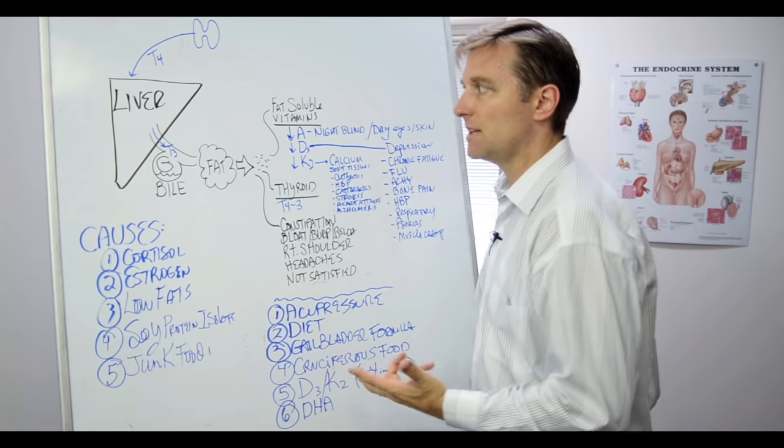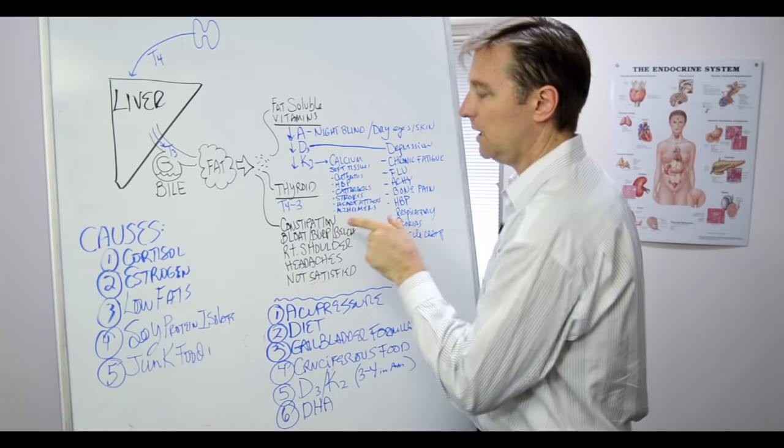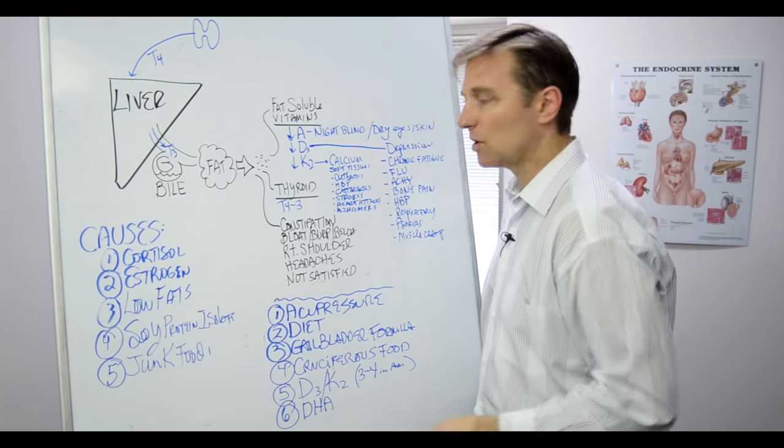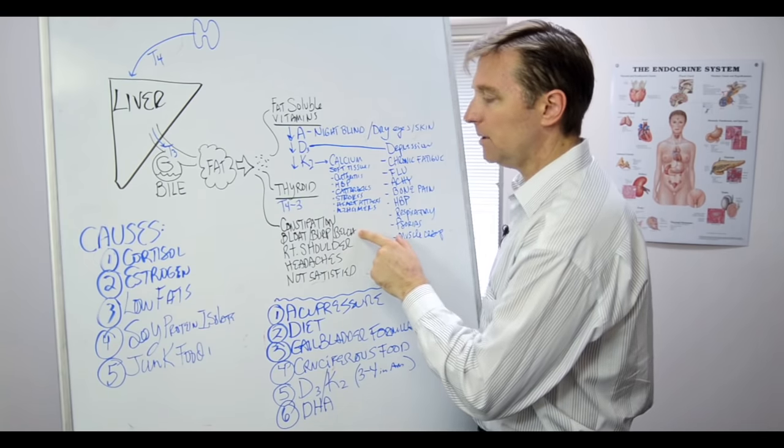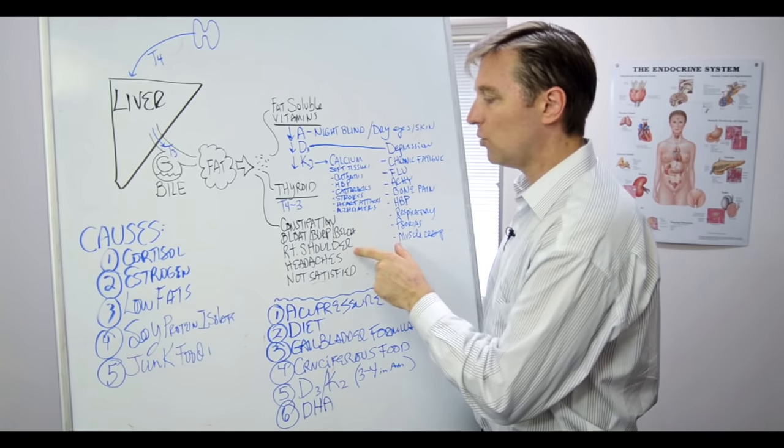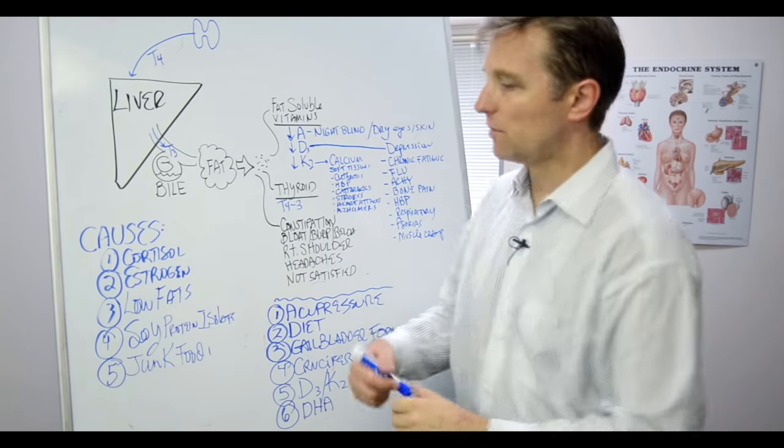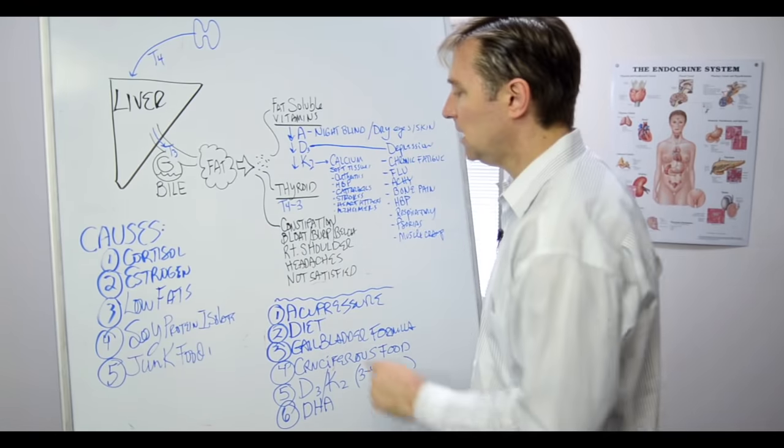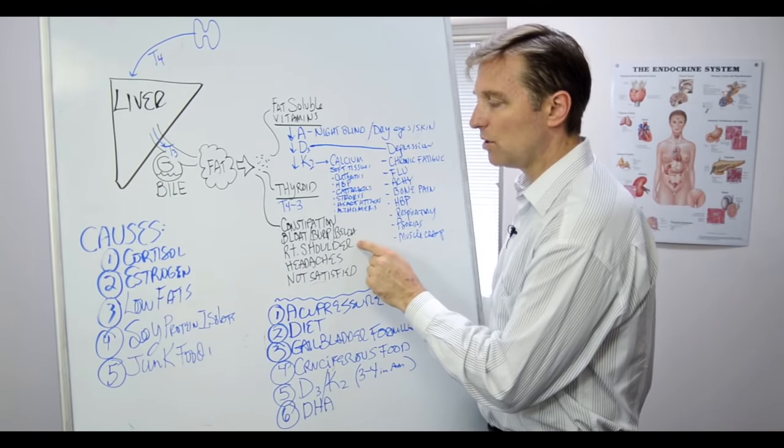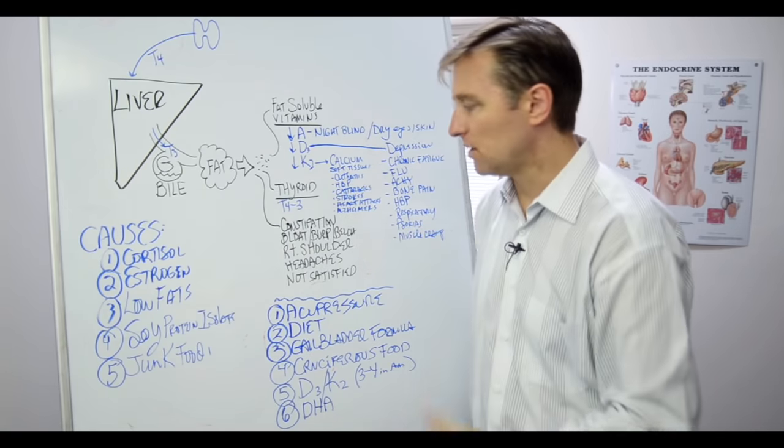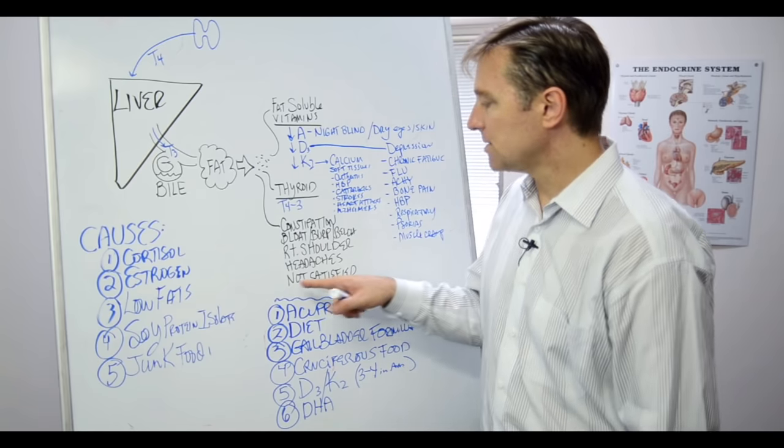Some other symptoms to identify low bile would be constipation. Why? Because bile acts as a lubricant to your colon. Bloating, burping, belching is a sign of congested gallbladder. Right shoulder pain, because there's a nerve on the right side that goes all the way up to the right shoulder. And it could be the neck, it could be headaches, right shoulder, right scapula, right trap, anywhere on the right. It can even pinch a nerve here and cause pain down the right arm.